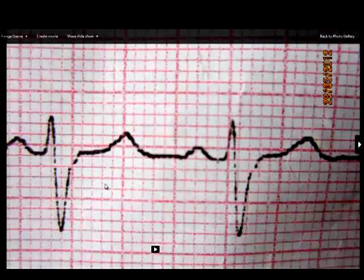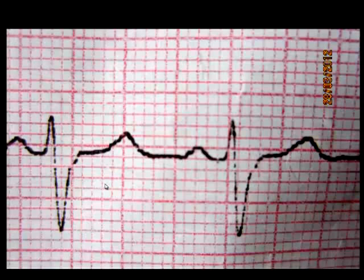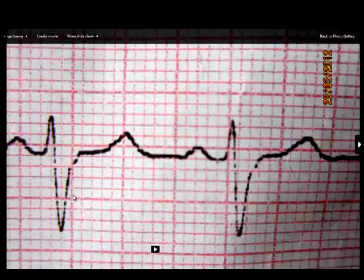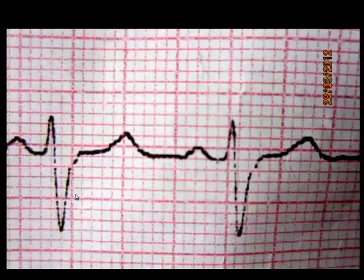Now, in an ECG graph paper with a speed of 50 mm per second, each small box is translated into 0.2 seconds, or 200 ms.